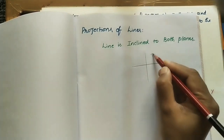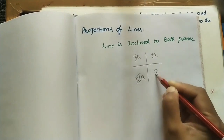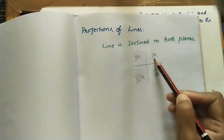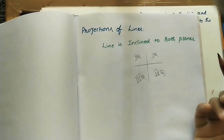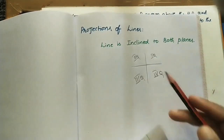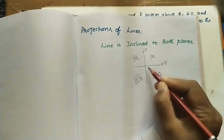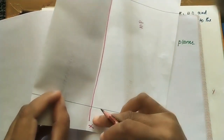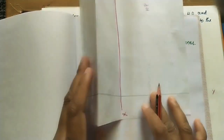In the graph, this is the first quadrant, second, third, and fourth. Whatever lines we take in these projections, we consider the line is in the first quadrant, meaning the line is above HP and in front of VP. Here, this is the vertical plane (VP) and this is the horizontal plane (HP). In 3D view, the line joining both planes is the XY reference line, and the angle between them is 90 degrees.